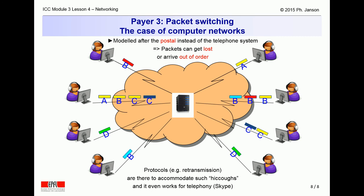Packet switching works like mail or parcel sorting in postal centres. Instead of a path being reserved between a sender and a receiver, a sender can more or less send whatever it likes, whenever it likes, to the nearest switching or sorting centre. The centre will then do its best efforts to convey the packet, mail or parcel, as soon as possible to the next nearest switching or sorting centre, and so on until the packet, mail or parcel, reaches its final destination.